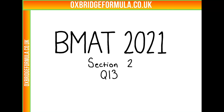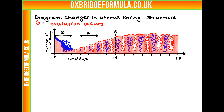This is BMAT 2021, Section 2, Question 13. Here we have a diagram which shows the changes in the lining of a uterus across a period of days. Point S is where ovulation occurs, and we also have these two other sections, Q and R.